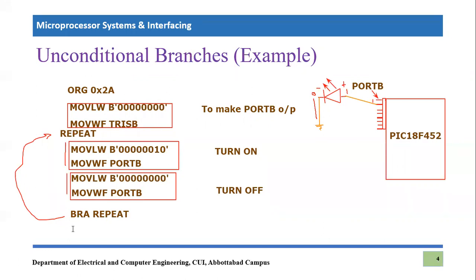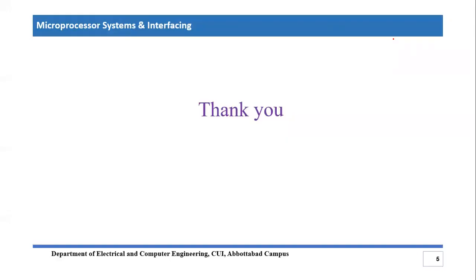One thing missing in the code: we write the assembler directive END to terminate the code. So ORG 0x2A directs the assembler to start the code at that point, and END tells the assembler that the code is finished. I hope you have understood the concept of short branch and unconditional branches. If you have any questions, please post them in the comment section. Thank you so much for listening.